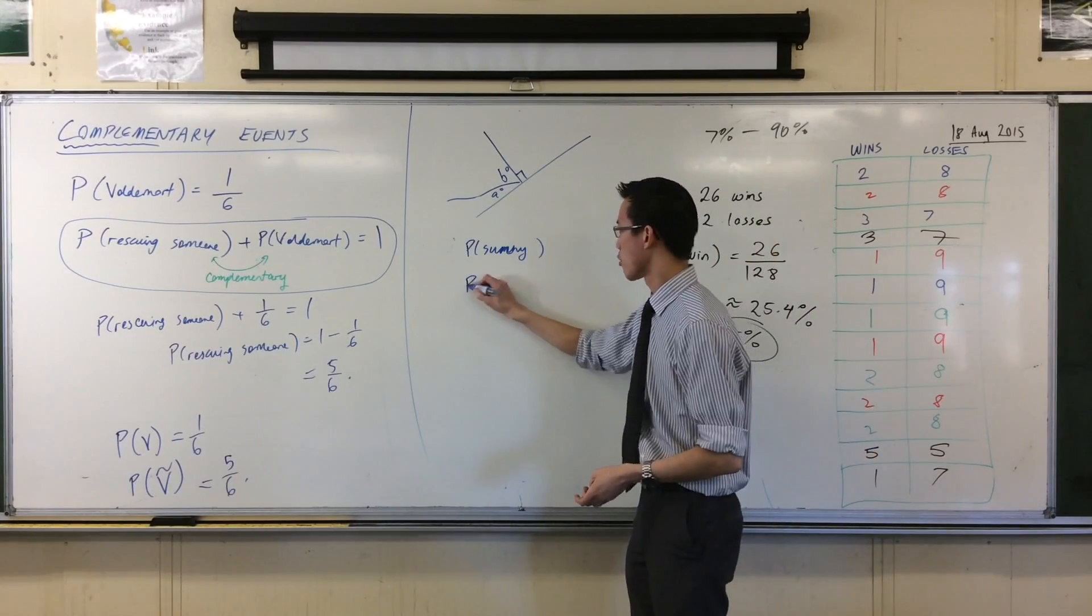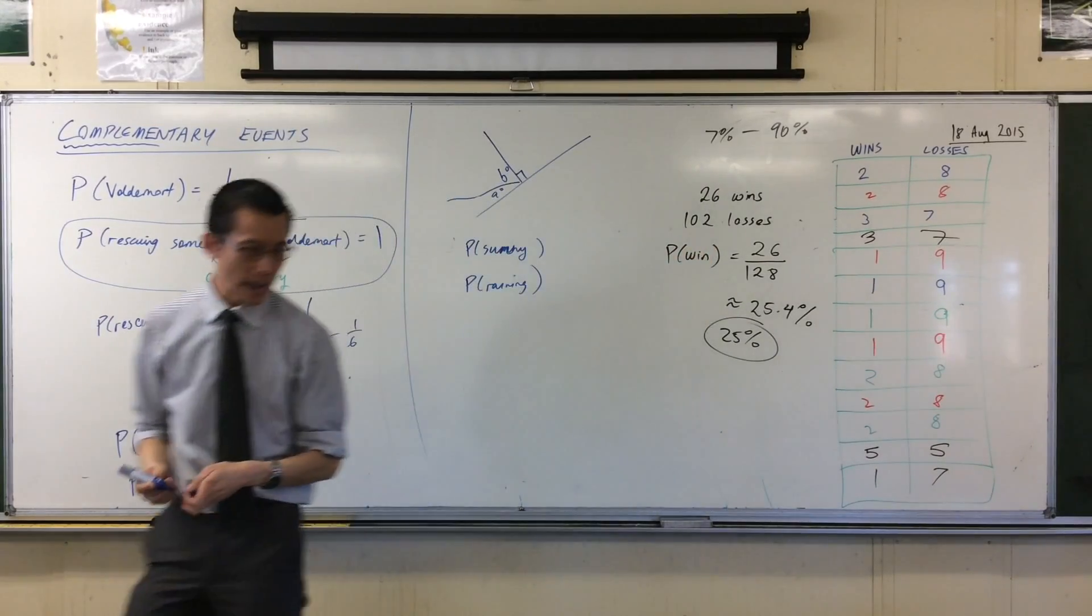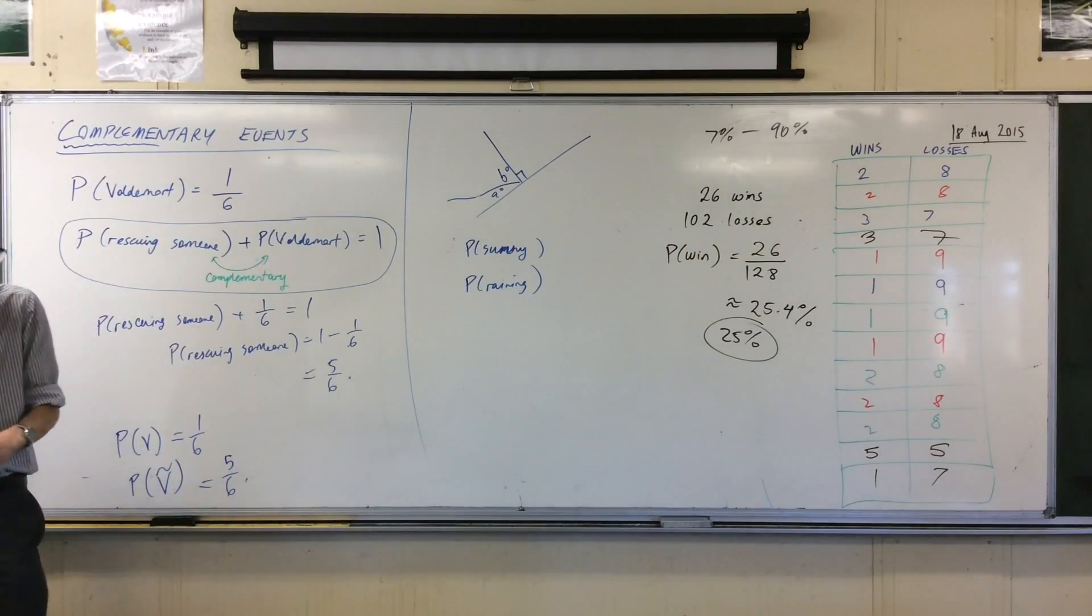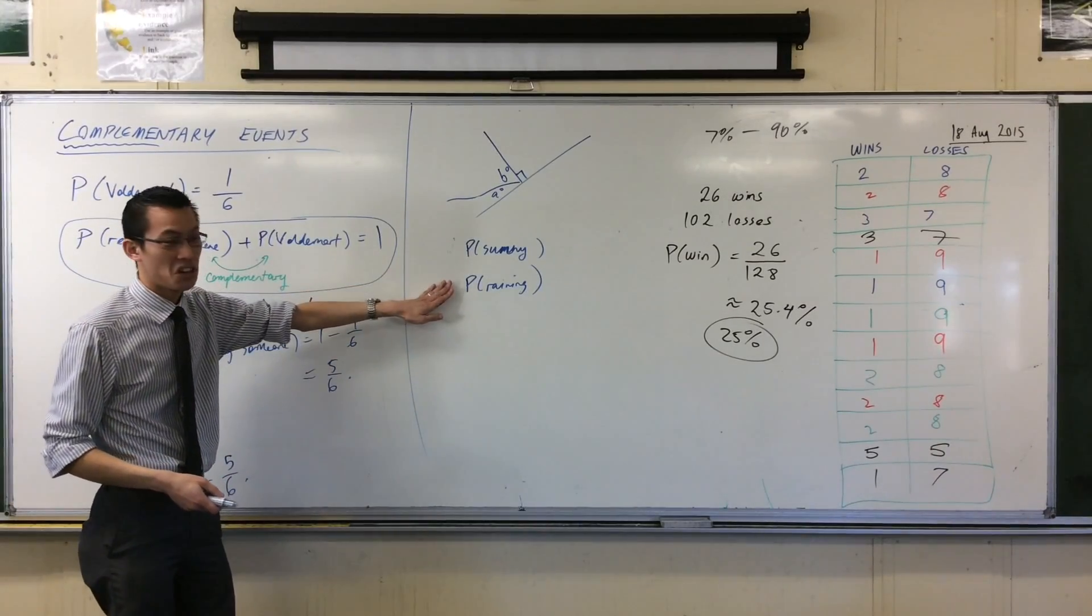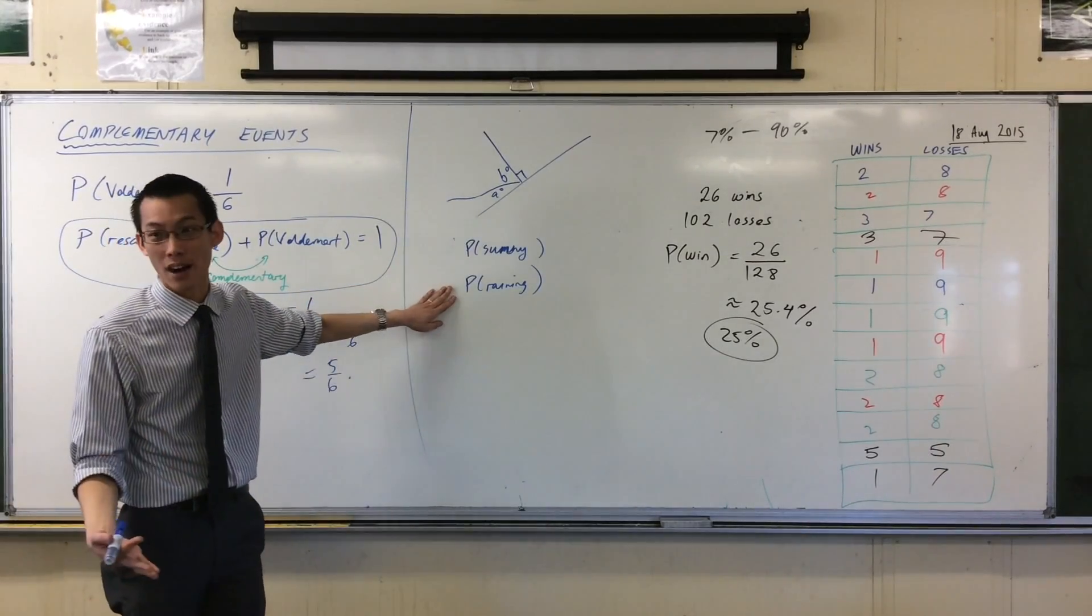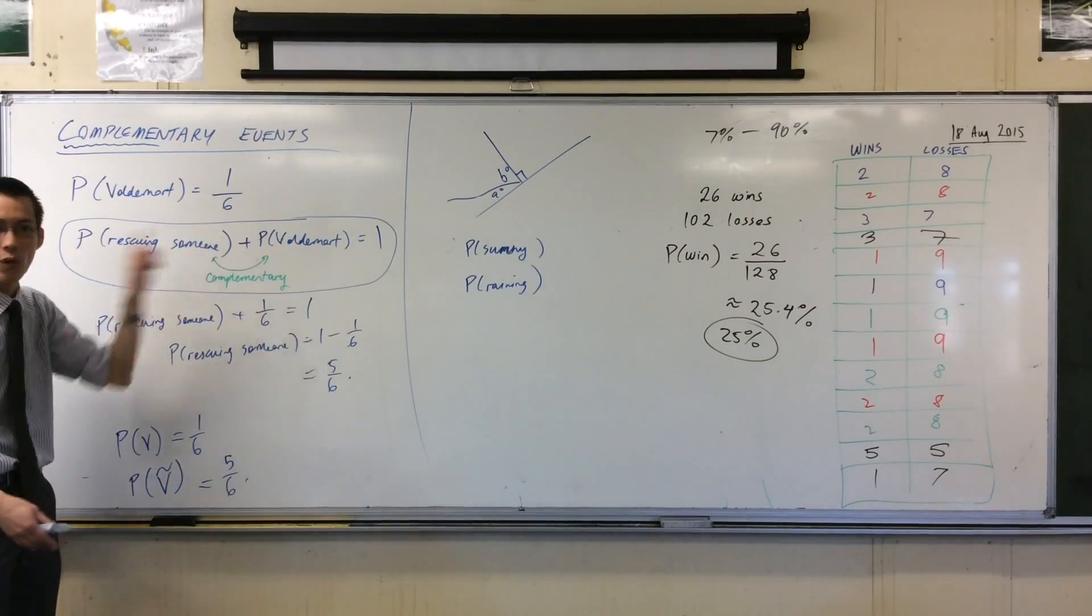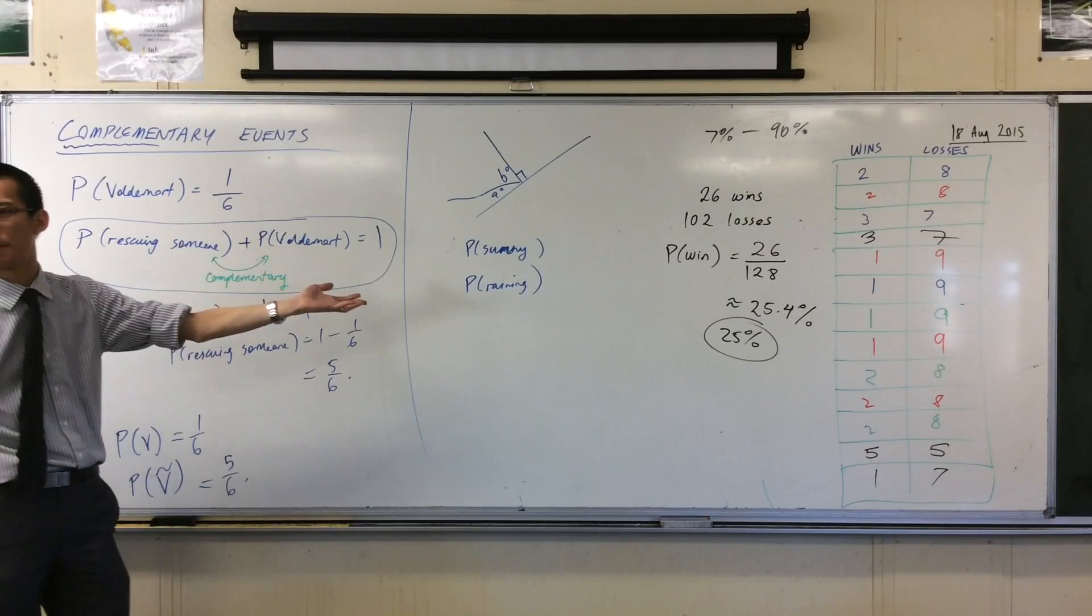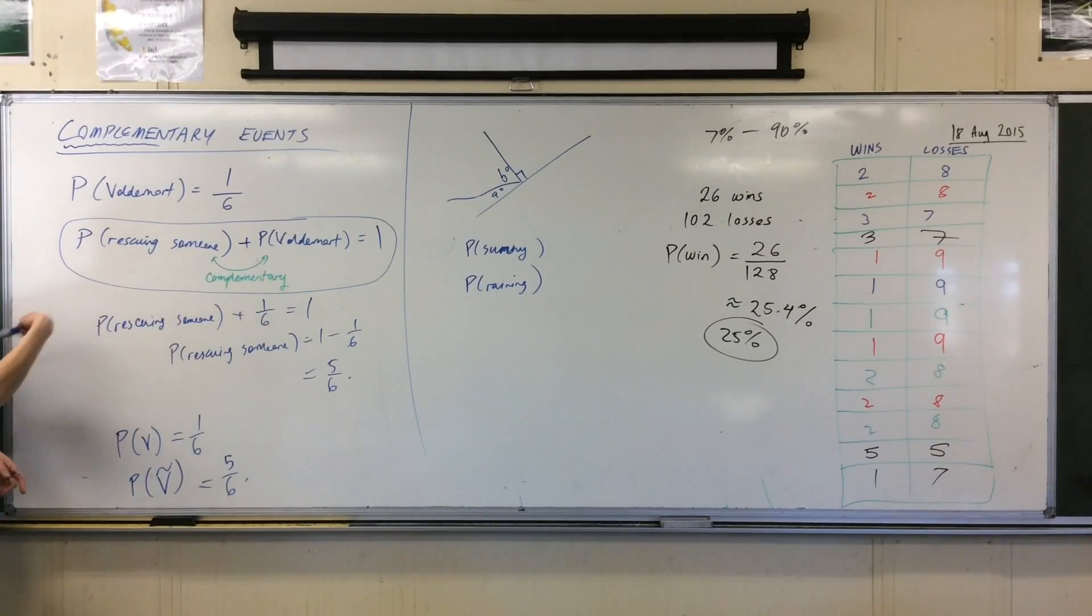For example, there are some events that you might think are opposites. The probability of it being sunny or the probability of it raining. Now these look like they're complementary, but they aren't, are they? Because it can be neither sunny nor rain, it could be like overcast. So these two don't add up to one. Neither of them might happen. So you have to be very careful about what's actually complementary together.